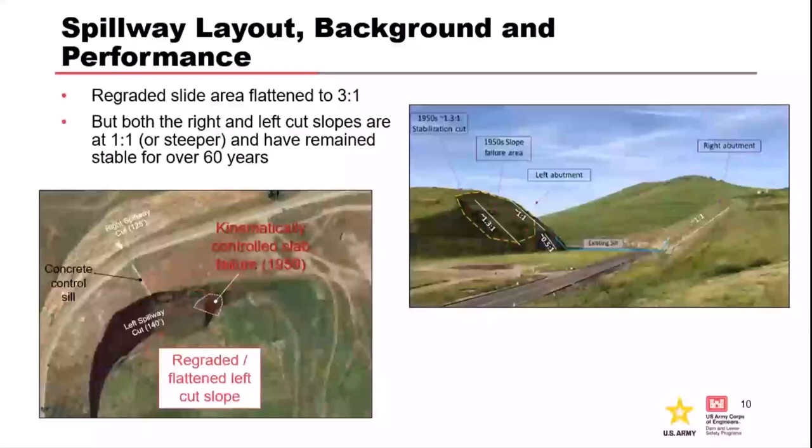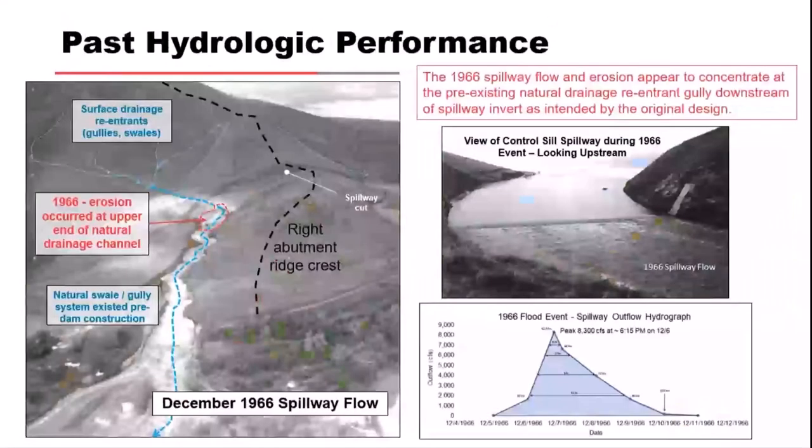Here's the regraded area where the rock slab failure came out. The slopes are one-to-one, 45 degrees, and they've held up well over the last 40 years. All this cut was blasted — not excavated with rippers or high pneumatic means. It had to be blasted. If you're doing erodibility studies and you have to blast rock, that should guide your perspective.